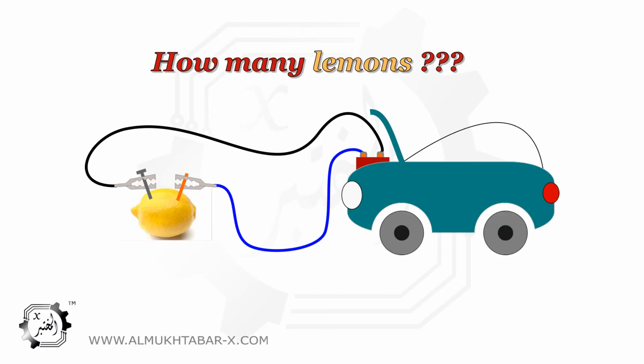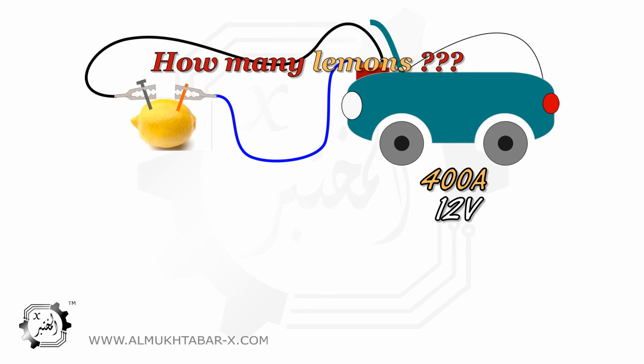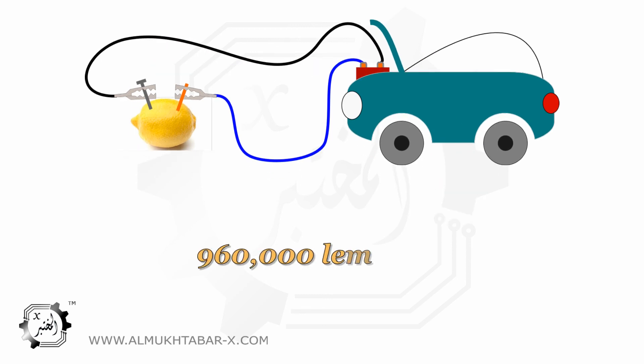Just for fun, what would it take to start your car using lemons? Well, since a small car needs around 400 amp at 12 volts to crank it, this means you would need about 960,000 lemons to start the engine. So we would better show some respect to that box in the car called the battery.